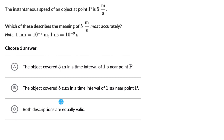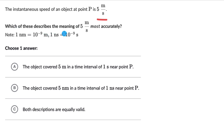Let's solve a couple of questions on velocity and speed. For the first one, we have the instantaneous speed of an object at point P is 5 meters per second. Which of these describes the meaning of 5 meters per second most accurately?